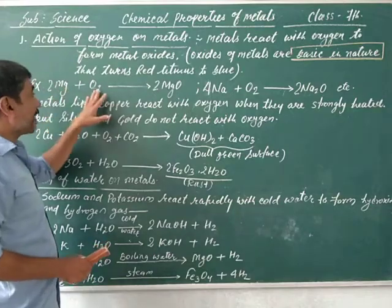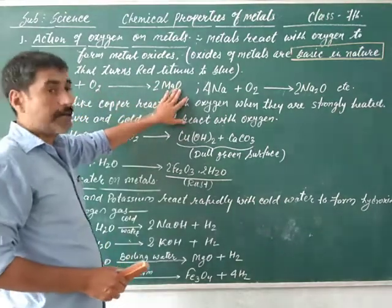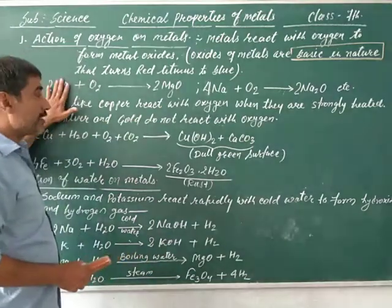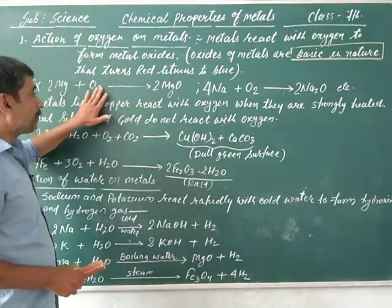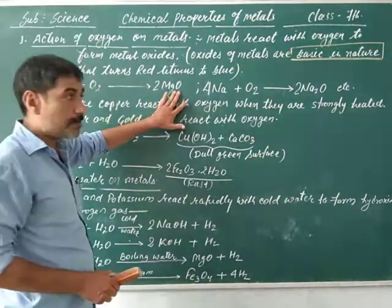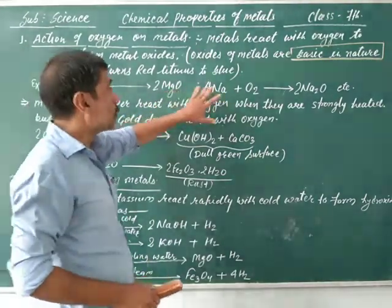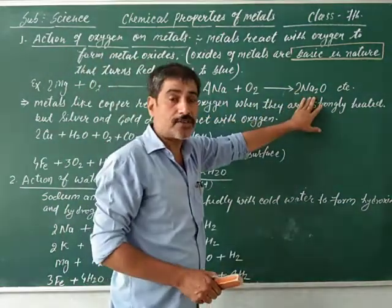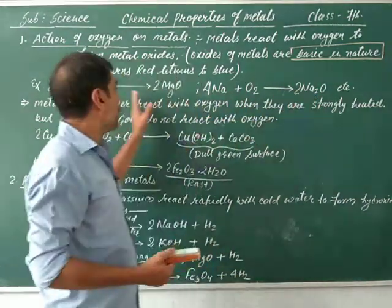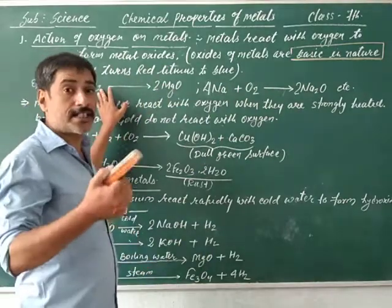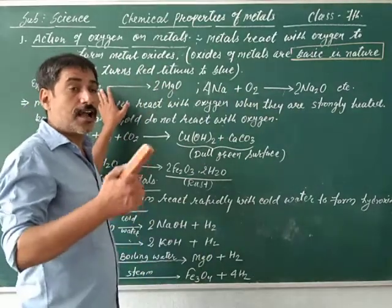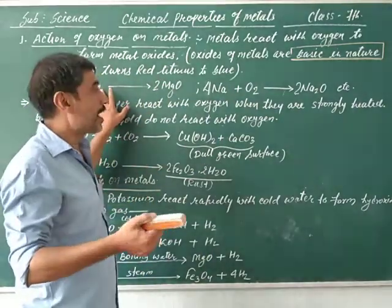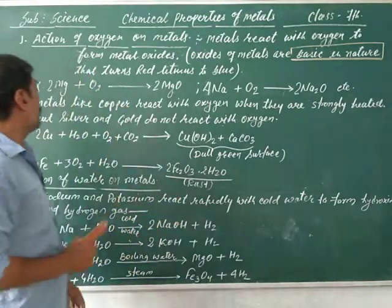Metals react with oxygen to form metal oxide. For example, magnesium reacts with oxygen to form magnesium oxide. Sodium reacts with oxygen to form sodium oxide. Potassium reacts with oxygen to form potassium oxide. Aluminium reacts with oxygen to form aluminium oxide, and so on.